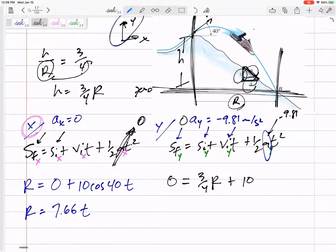The V initial is 10 sine 40 T. Don't forget this T right here. That's a very common mistake. It's V-I-T, right? So anyway, sine 40, and the T's outside of the sine. Sine 40 times T.